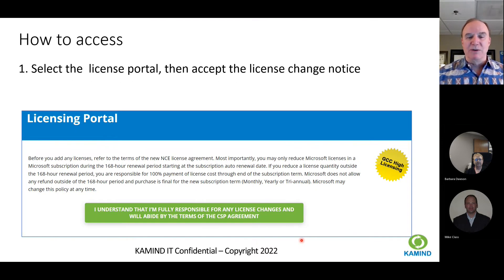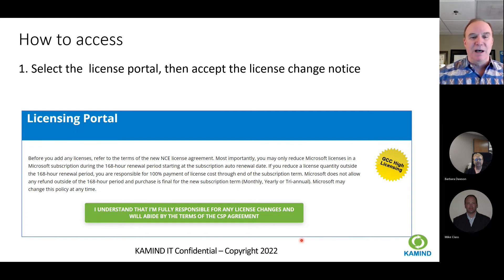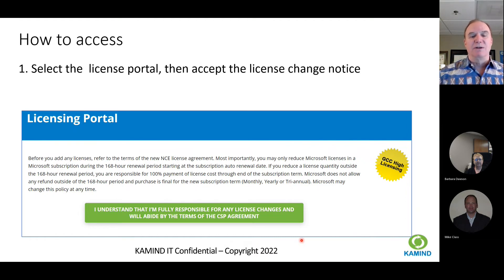The way Microsoft structures it, you are responsible for the licenses to the end of the term. So if by mistake you buy 100 E3 licenses and you only meant to buy 10, and you're on a three-year agreement, you're basically going to pay for 100 licenses over 36 months — and that becomes very, very expensive. So contact us immediately if you make a mistake.